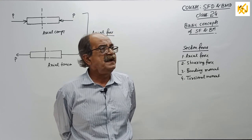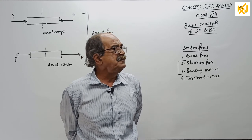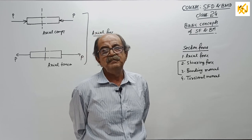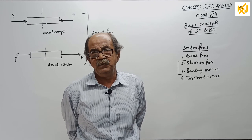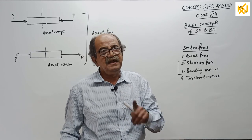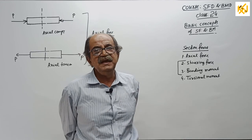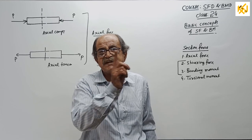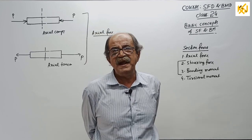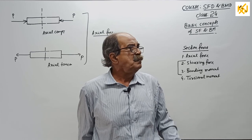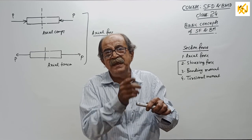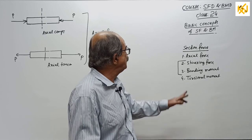Later, when I say shearing force at C or bending moment at D, it actually means shearing force for the cross-section of the beam at C, or bending moment for the cross-section of the beam at D. That is how you have to read it.